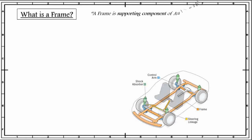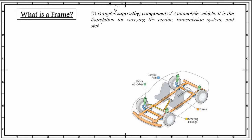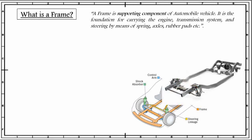What is a frame? A frame is a supporting component of an automobile vehicle. It is the foundation for carrying the engine, transmission system, and steering by means of springs, axles, rubber pads, etc. As you can see, this is an example.